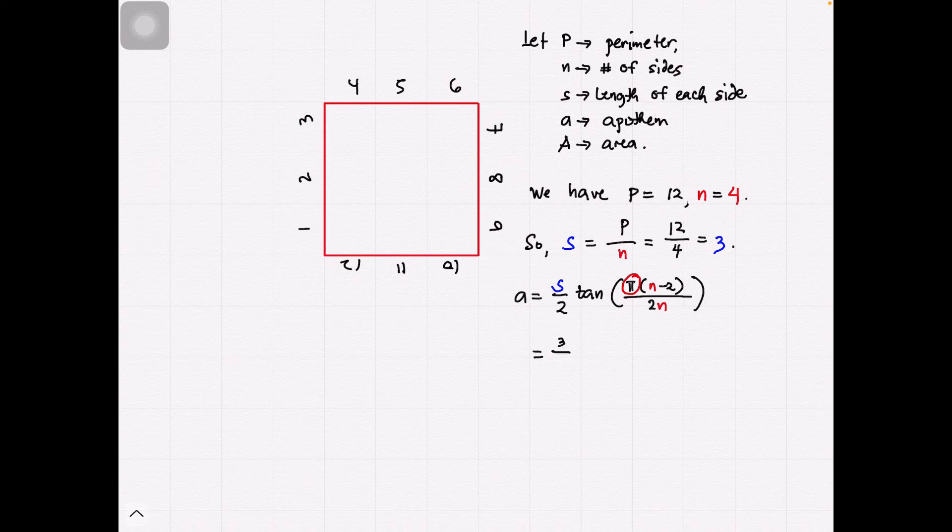Now, with S equals 3, we now have 3 over 2, and pi to be equivalent to 180, this would be tangent, 180 times N, which is 4, minus 2, all over 2 times N, or 4.